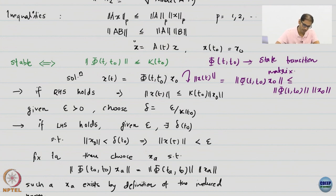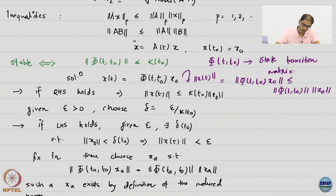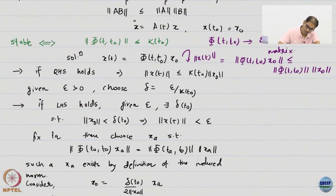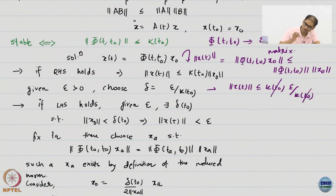Now, if I am given an epsilon, I choose my delta as this — delta is just epsilon divided by K(T0). It is obvious that if this happens, then the norm of x is less than or equal to K(T0) times epsilon over K(T0), and I am done.